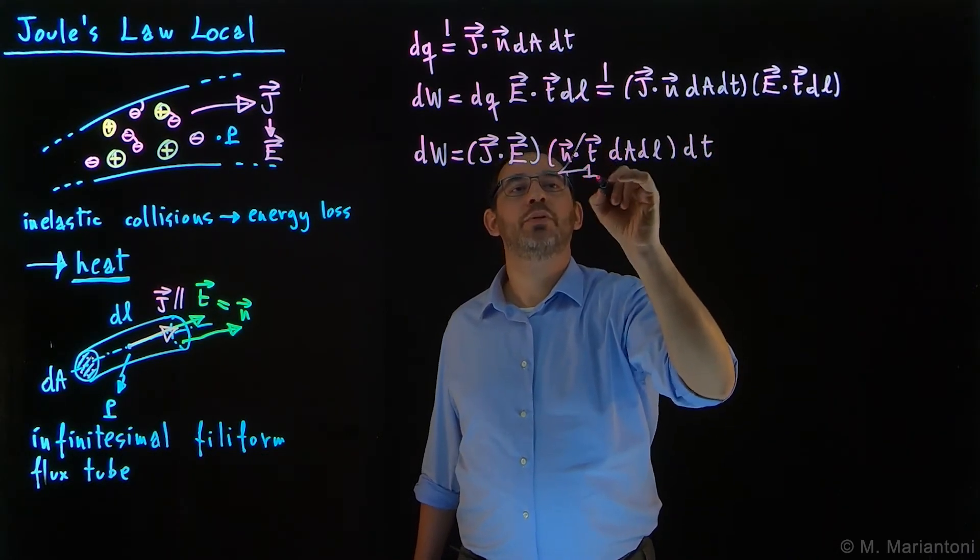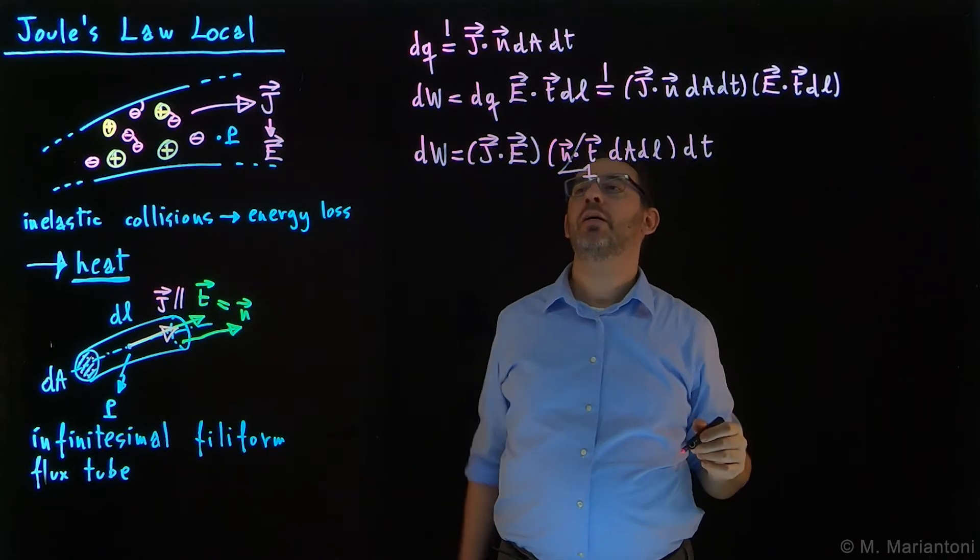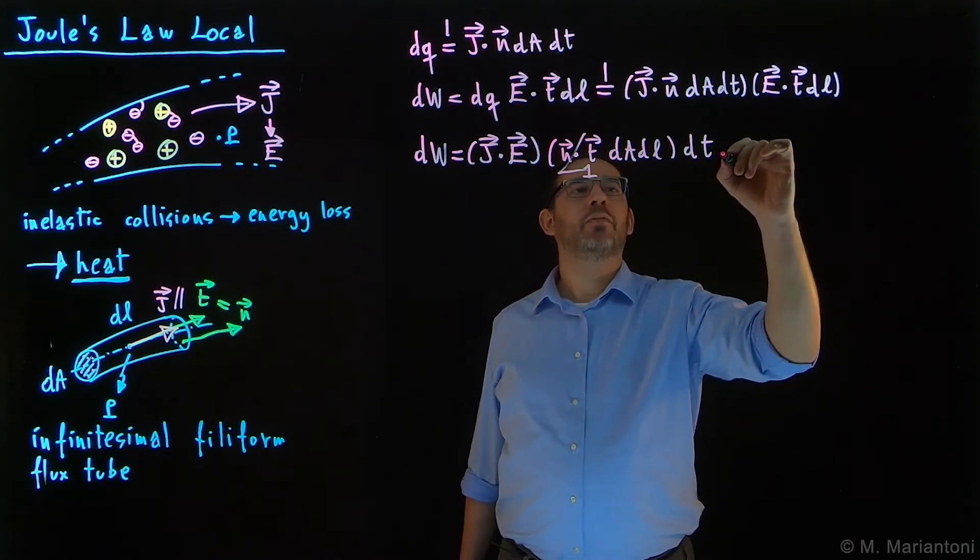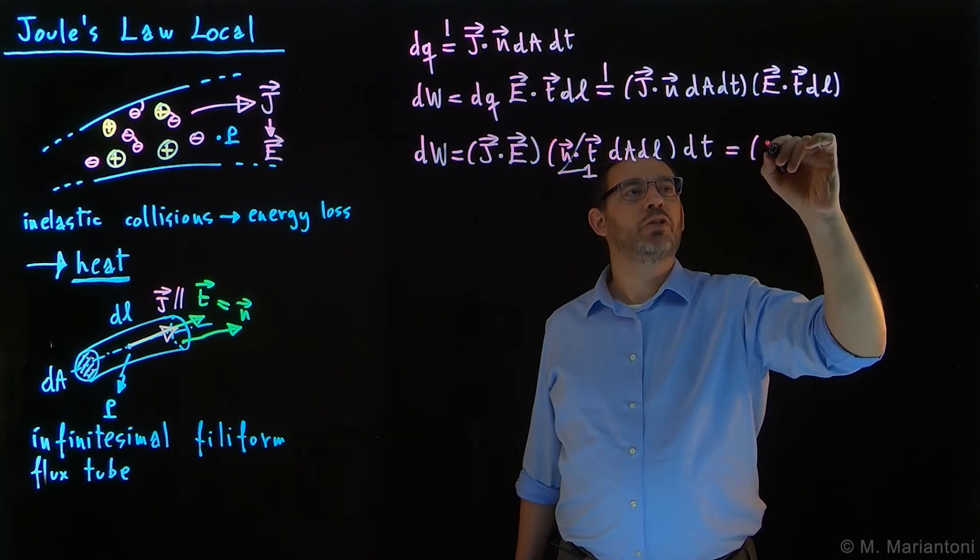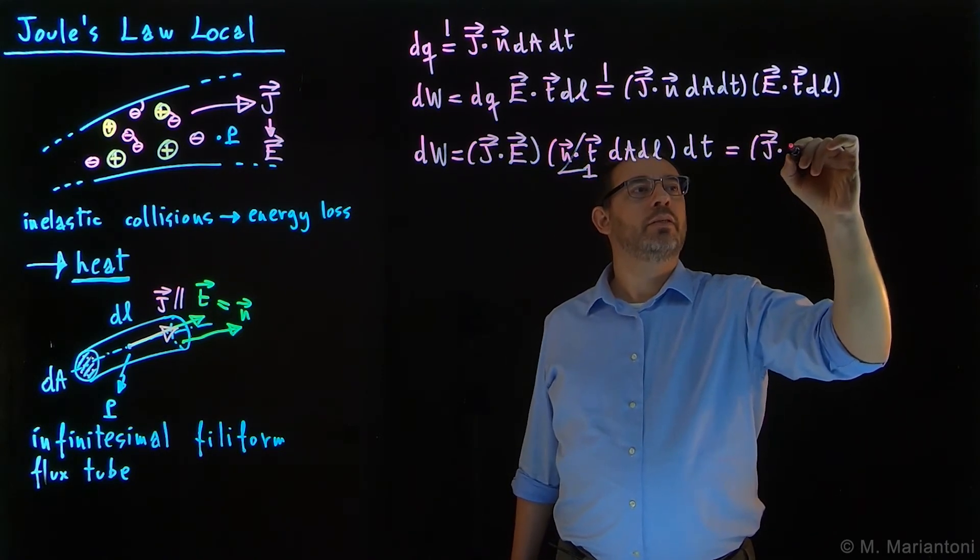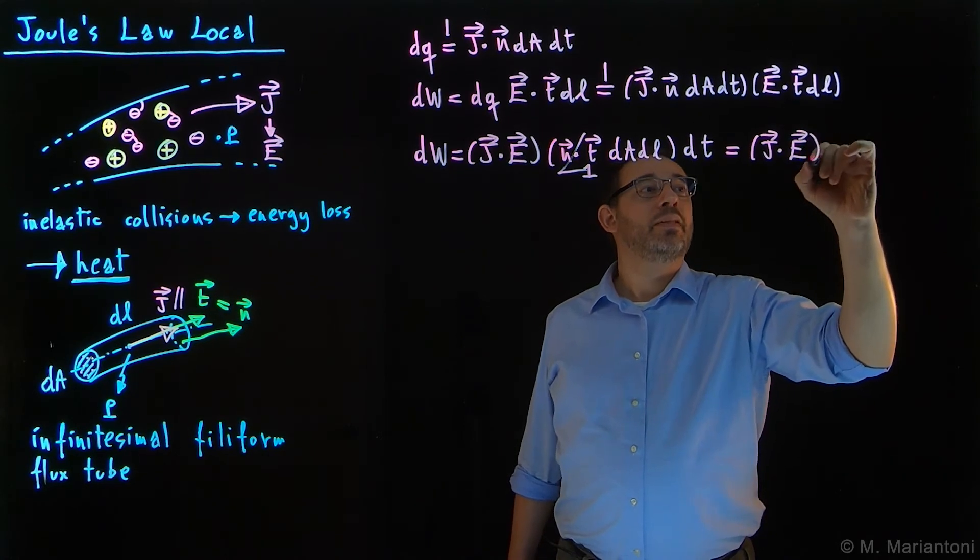Now, interestingly enough, this quantity n·t of course gives me one because they are parallel, as I wrote here, and so this quantity effectively is nothing but dA dl, which is dV, so it gives me j·E dV dt.